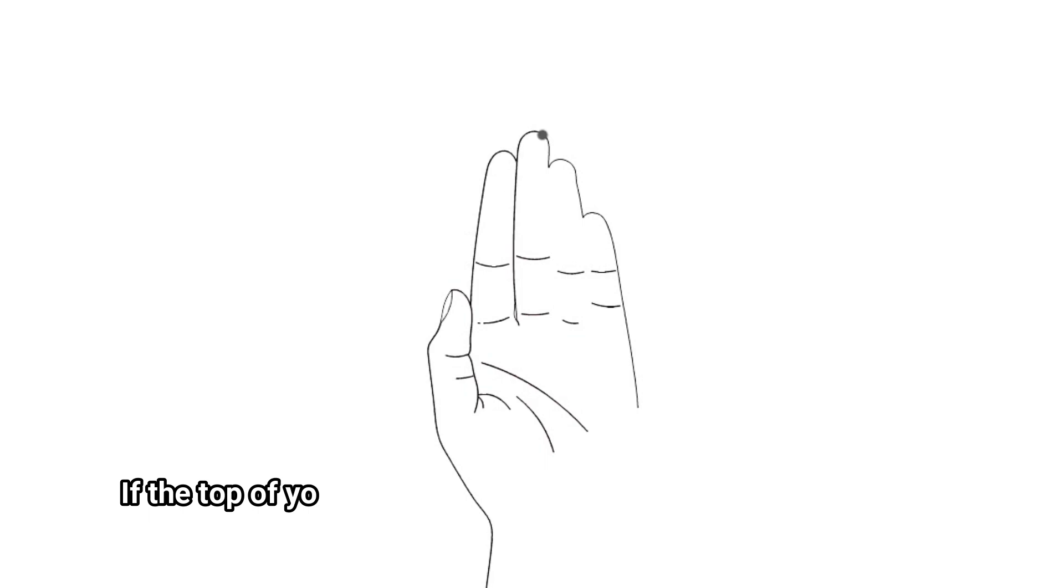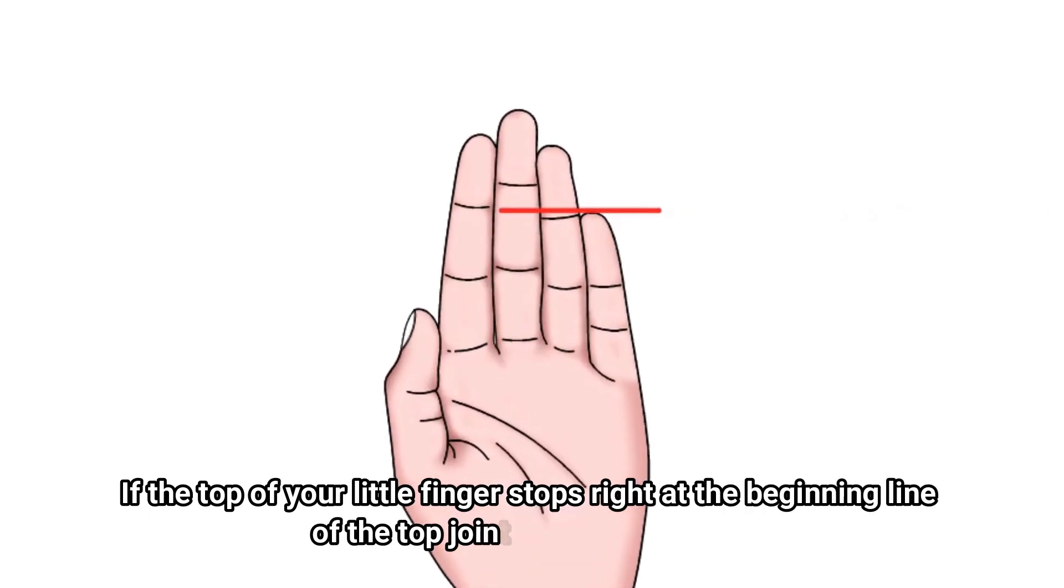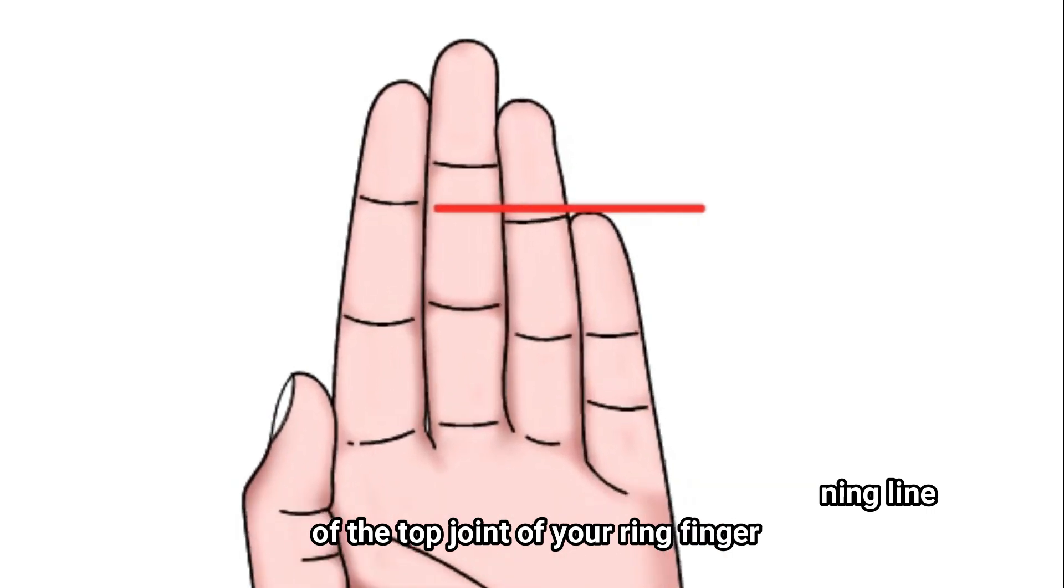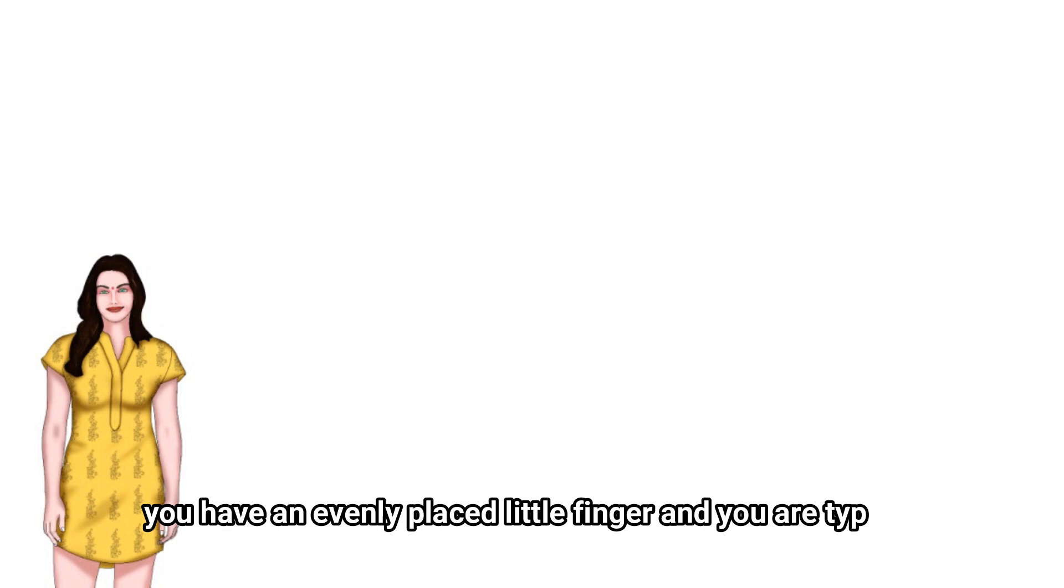Type A: If the top of your little finger stops right at the beginning line of the top joint of your ring finger, you have an evenly placed little finger and you are type A.